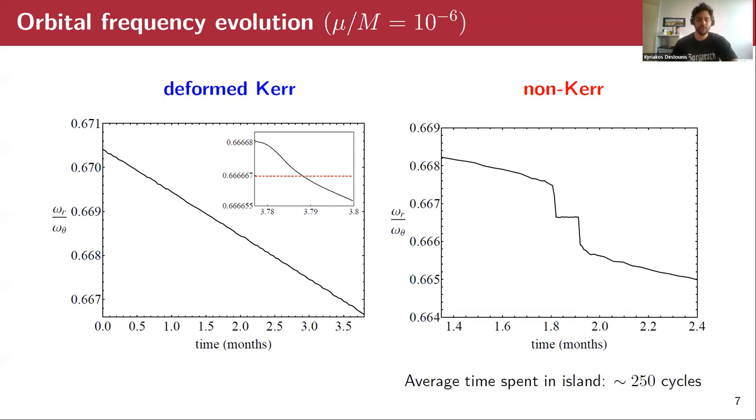Now, let's take our inspiral with some initial conditions, same initial conditions for the deformed Kerr which is integrable and the non-Kerr which is not integrable, and evolve an inspiral for some months. We see that in the deformed case, even though we cross the resonance of 2 over 3, nothing special happens at the adiabatic approximation level. On the other hand, in the non-Kerr case, when we hit the resonant island, we have a so-called plateau. Therefore, the evolution of the frequency ratio is not monotonous, which is an imprint of non-integrability at the orbital level. Here, it's really important to say that the average time spent here in this island is 250 cycles, and this is in pure resonance in contrast to the resonances that happen in Kerr, which are just single points in the phase space.